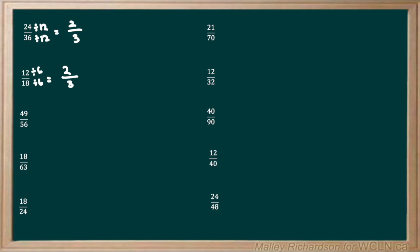Now we have 49 over 56. 49 only has three multiples: 1, itself, and 7, because 7 times 7 is 49. So we divide the top and bottom by 7 because 7 can go into both 49 and 56. 49 divided by 7 is 7 and 56 divided by 7 is 8. 7 eighths cannot be reduced down any further, so 7 eighths is our final answer.